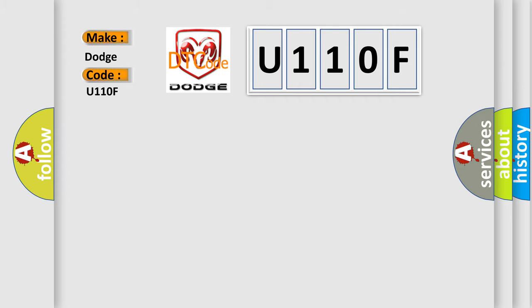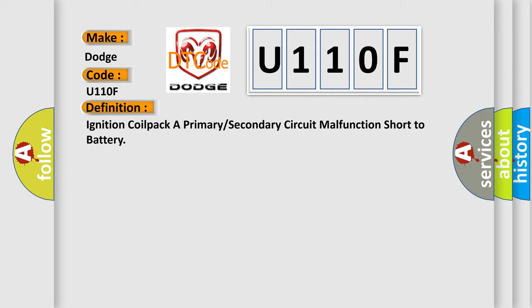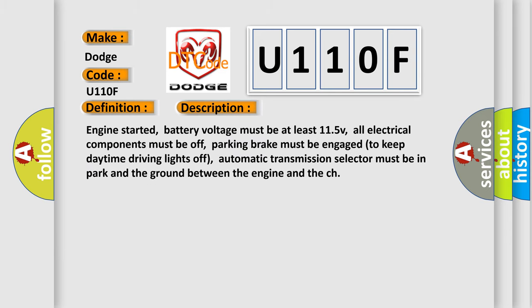The basic definition is ignition coil packer primary or secondary circuit malfunction short to battery. And now this is a short description of this DTC code: Engine started, battery voltage must be at least 11.5V, all electrical components must be off, parking brake must be engaged to keep daytime driving lights off, automatic transmission selector must be in park, and the ground between the engine and the chassis.